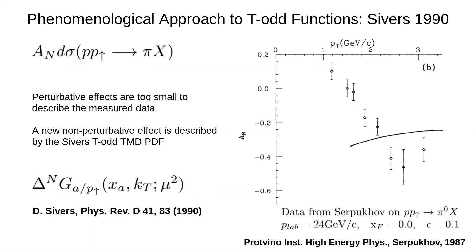In Sivers' original paper of 1990, we see data from Serpakov's experiments measuring P-P to pion collisions. It was known that perturbative effects from the collinear parts of the cross-section, which are proportional to the quark mass, would be too small to describe the measured data. So Sivers proposed a non-perturbative function, which she shows here to have the correct order of magnitude.